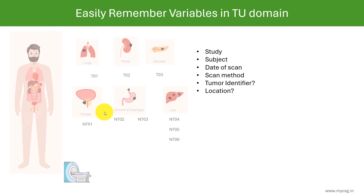Additional questions include: what is the location of each tumor identified, and what is the laterality — meaning the side affected? For organs like lung and kidney, we need to know whether it is on the left or right side. We also collect the tumor type. In this case there are 3 target and 6 non-target tumors, and we create one row for each tumor in the TU domain to record whether it is a target or non-target tumor.